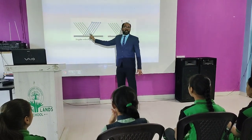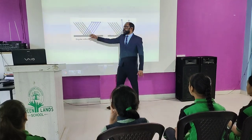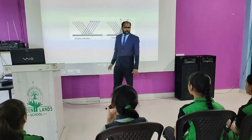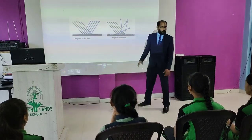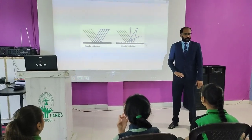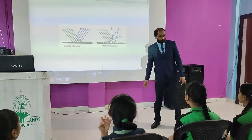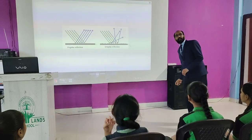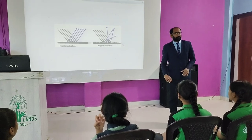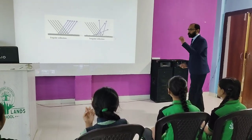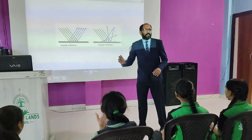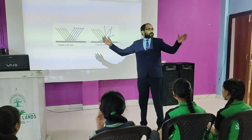In regular reflection, the incident ray comes and reflects parallel. But in irregular reflection, the surface is bumpy or uneven. Think about it like playing cricket — if the pitch is a little bit bouncy, when you bowl and the ball hits somewhere, there is a chance it will go in a different direction.